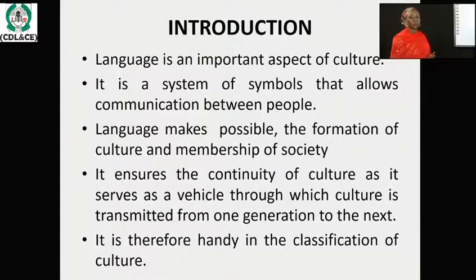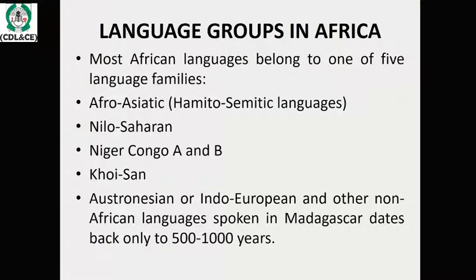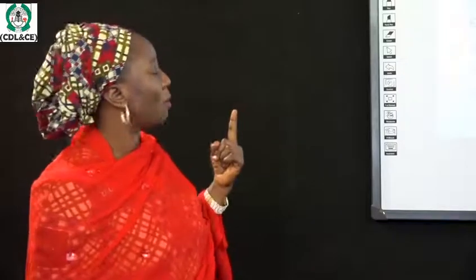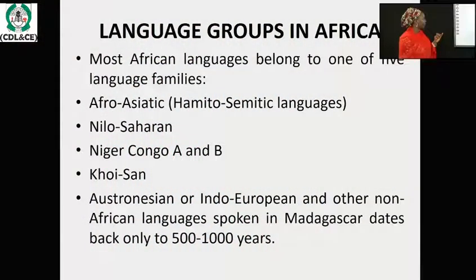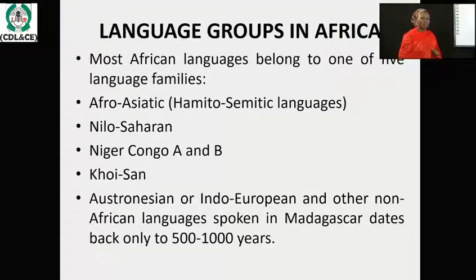Language is very important because we cannot talk about language without looking at culture. Now let's look at language groups in Africa. Most African languages belong to one of five language families: the Afro-Asiatic language, the Nilo-Saharan language, the Niger-Congo language — divided into Niger-Congo A and Niger-Congo B — the Khoisan language, and the fifth one is the Austronesian or Indo-European language. This last one I will explain further when we get to that point.